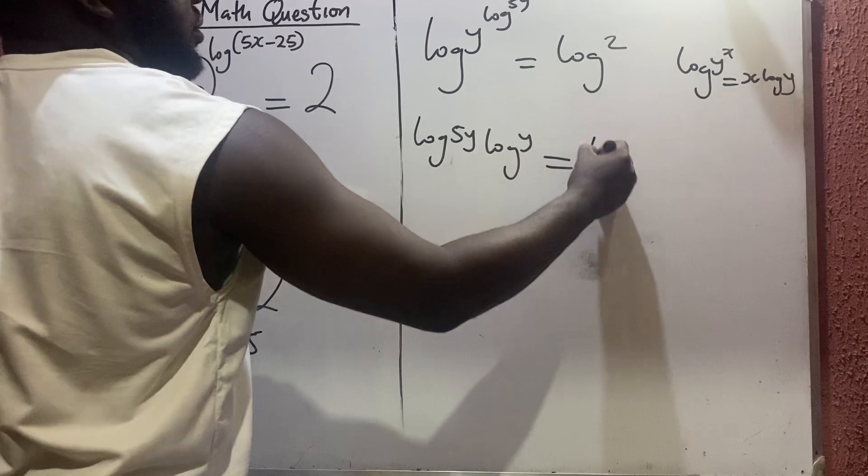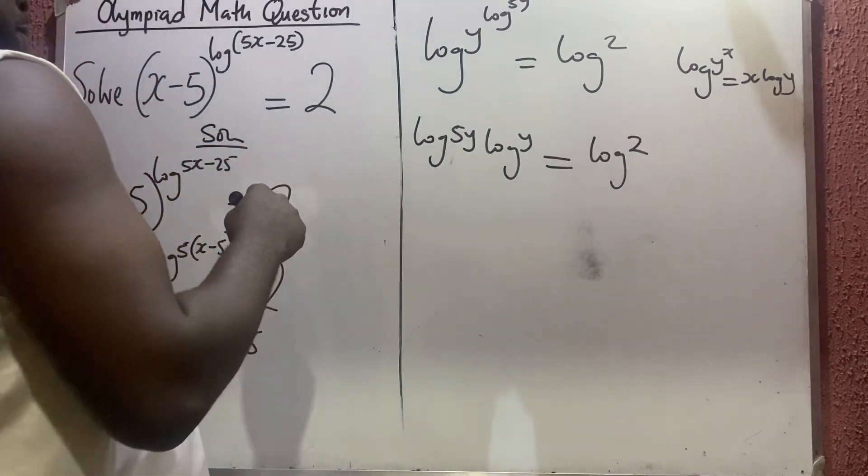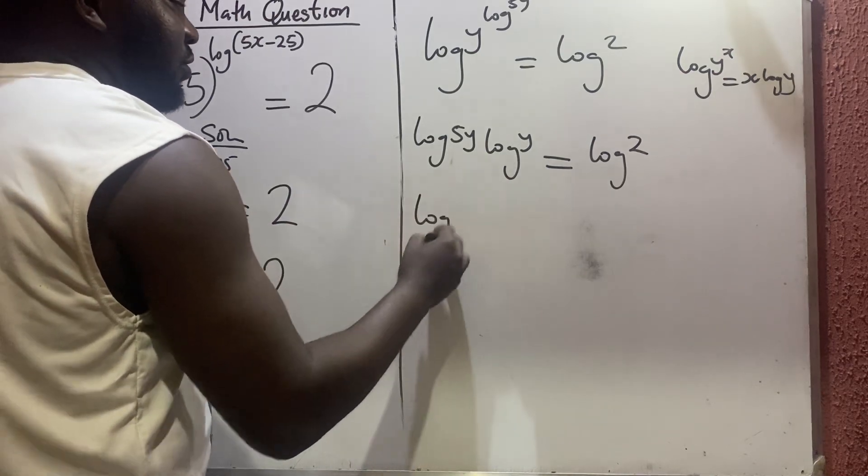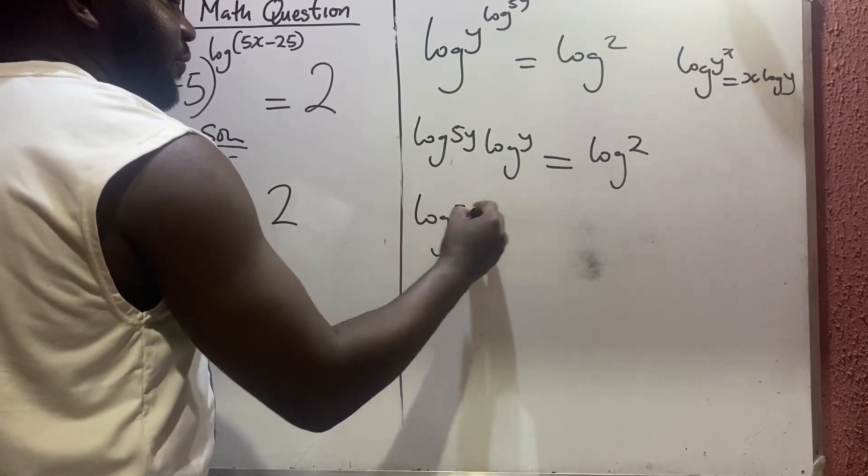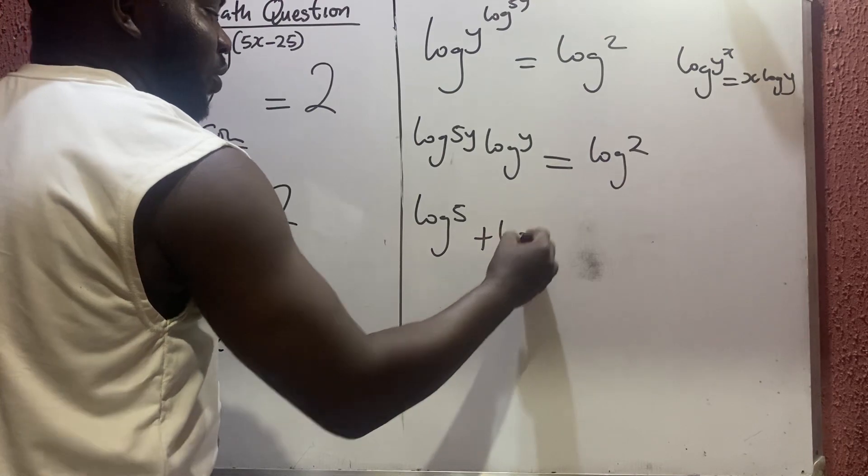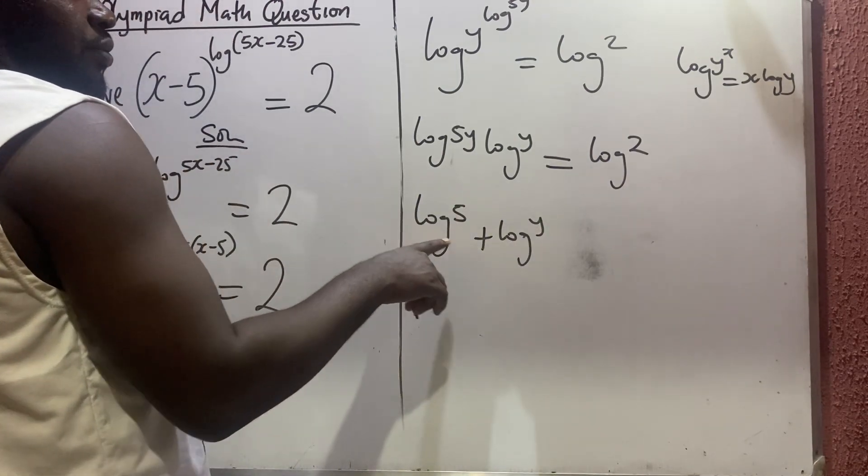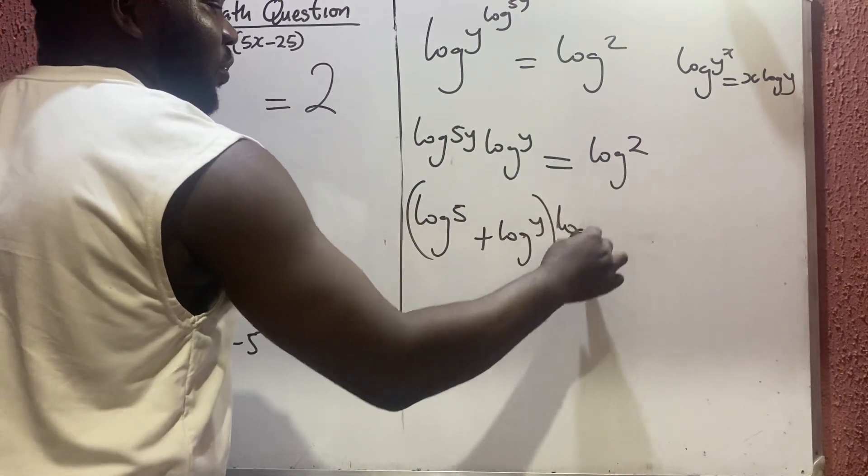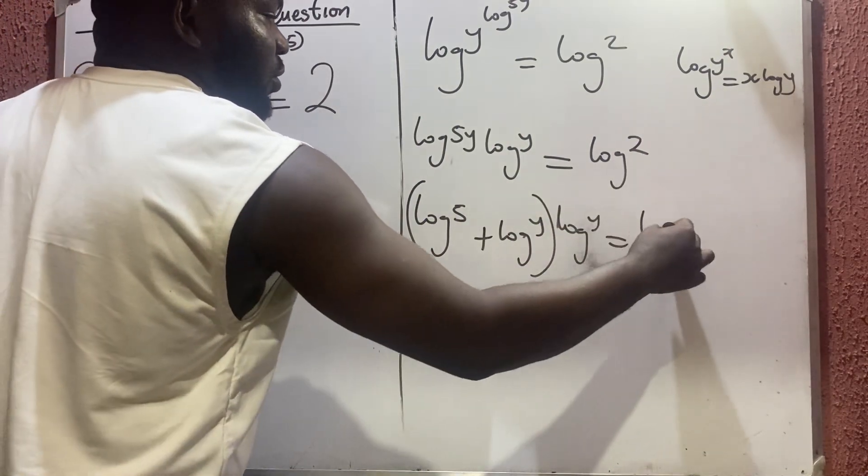Now let us separate this. If I separate this, I'm going to have (log 5 plus log y) times log y equals log 2, according to log rules where multiplication brought about the plus.